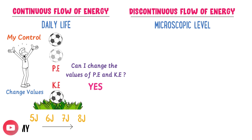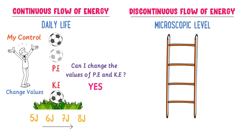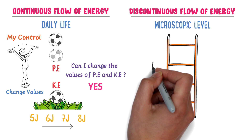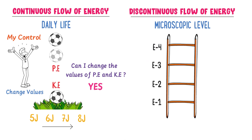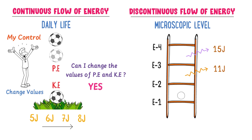Now coming to the concept of discontinuous flow of energy. According to Bohr's atomic model, an electron can reside in different energy levels — like the first, second, third, and fourth energy levels — like steps of a ladder. Consider an electron at the highest energy level. When it jumps from the fourth energy level to the third, it loses or radiates energy — let's say 15 joule. When it jumps from the third to the second, it loses 11 joule energy. And when it jumps from the second to the first, it loses 4 joule energy.